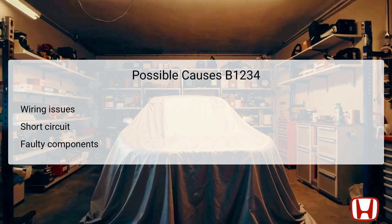Understanding the possible causes of DTC B1234 is key to effective troubleshooting. First, wiring issues such as frayed or damaged wires could lead to a short circuit, affecting the connectivity between components. Next, a direct short in the circuit could also be causing the issue — when wires touch or connect incorrectly, signals can get disrupted. Additionally, the air mix control motor itself may be malfunctioning, either due to wear, damage, or manufacturing defects.